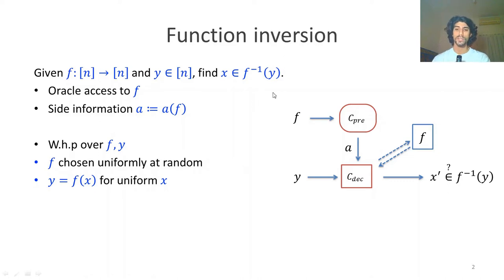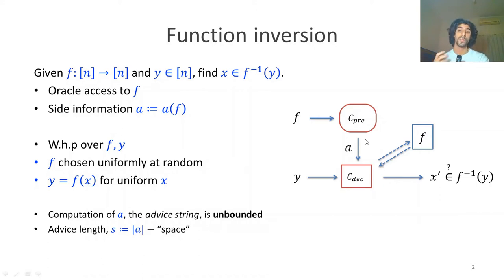We don't assume the computation is bounded. The preprocessor is unbounded in time and space. However, we do have two interesting parameters. The first is the advice length s, which functions as a lower bound on the amount of space needed to perform the inversion. And we also have q, the number of queries performed by the decoder, which is an effective lower bound on the time requirements.